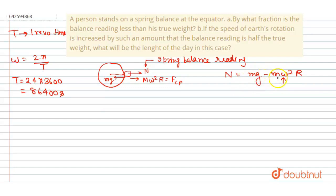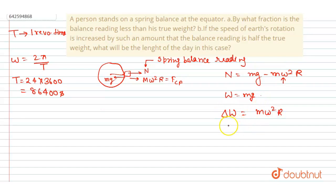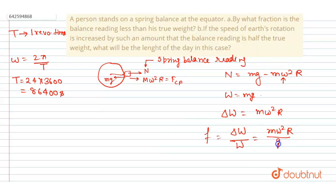Earlier the weight was mg when the Earth wasn't rotating. Now the change in weight is mg − N = mω²R. For the first part, we need the fraction by which the spring balance reading is less than the true weight. The fraction is: change in weight divided by true weight = mω²R / mg, and the m cancels out.